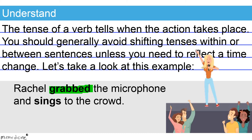However, the second verb, 'sings,' is written in the simple, singular, present verb tense. There is no need to reflect a time change, so both verbs should be in the same tense in this instance. Shifting the tense of the second verb to its present tense verb form is incorrect, because this creates inconsistency in the overall tense of the sentence. Change 'sings' to its simple, singular, third person, past tense verb form to restore consistency.